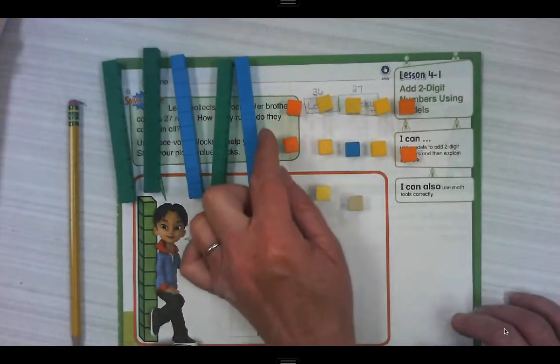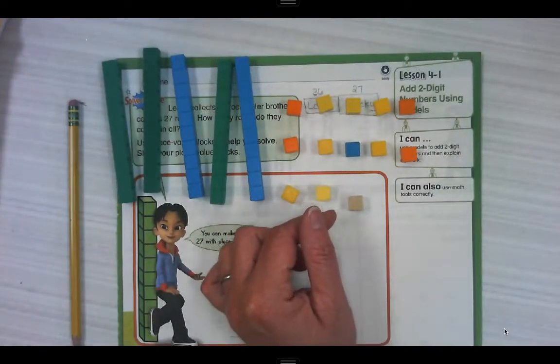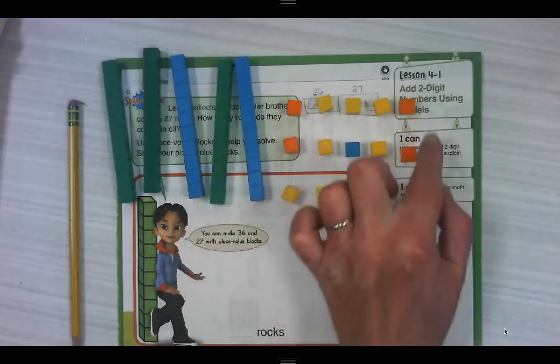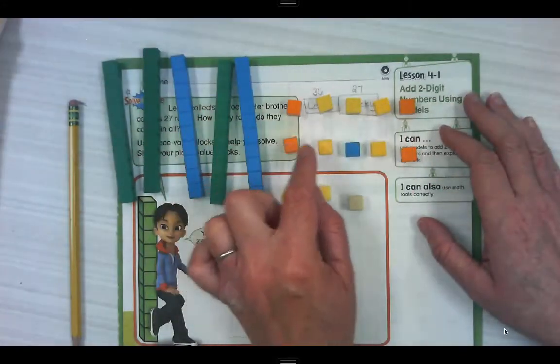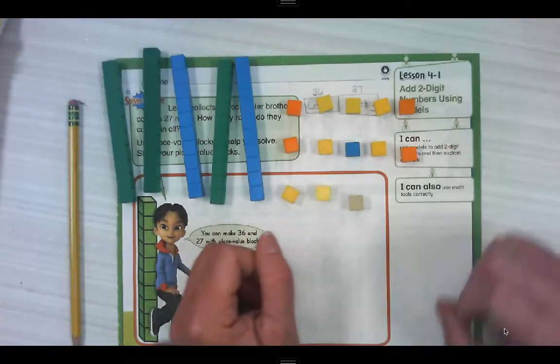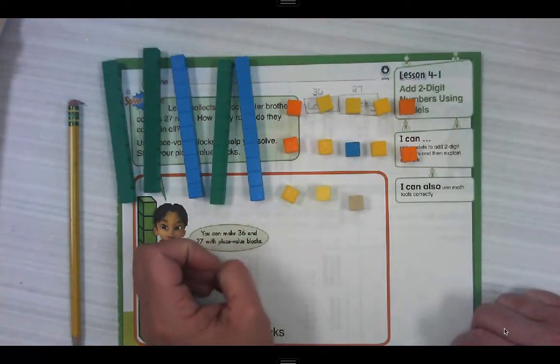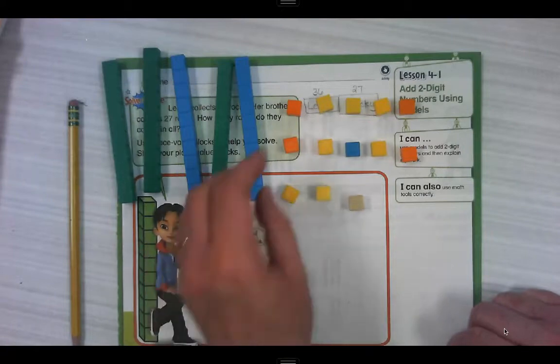So I noticed right away that we have more than 10 ones. This is 10 because this is a full 10 frame: one, two, three, four, five, six, seven, eight, nine, 10, 11, 12, 13. Can we have 13 in the ones place? No, we certainly cannot.